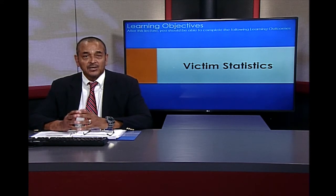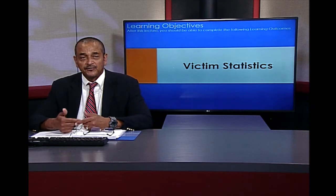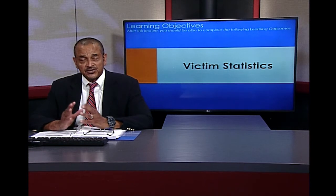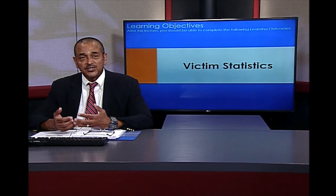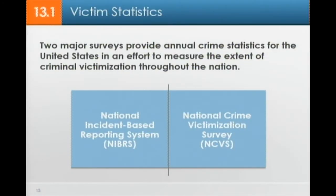How do we know there is crime and victimization? Local, state, and federal agencies collect statistical information, and they do have a statistically sound sample, so these statistics tend to be very accurate. Two major surveys are the National Incident-Based Reporting System, also known as NIBRS, and the National Crime Victimization Survey, or NCVS. They provide annual crime statistics for the United States in an effort to measure the extent of criminal victimization throughout the nation. When you hear about the crime rate for a given year, those data were derived from these reporting systems.